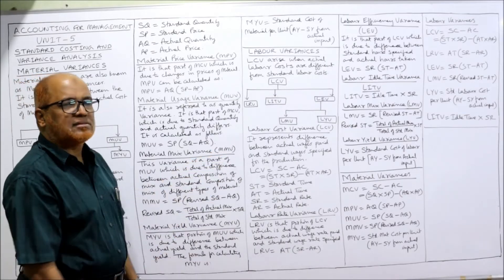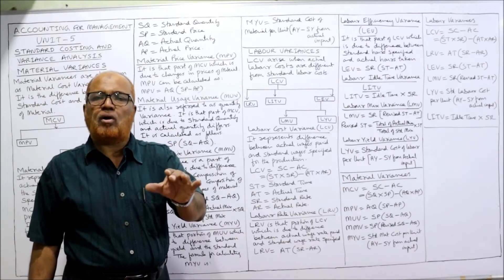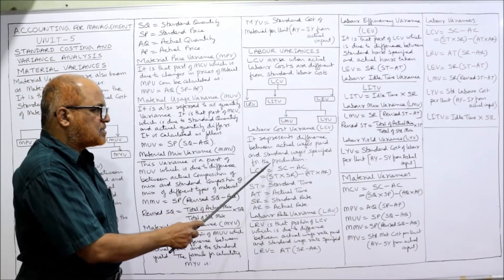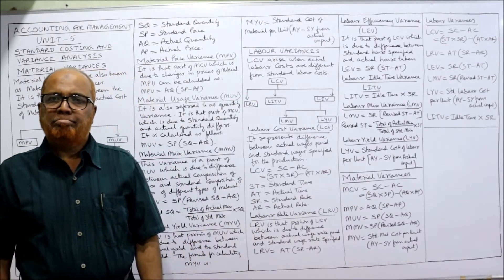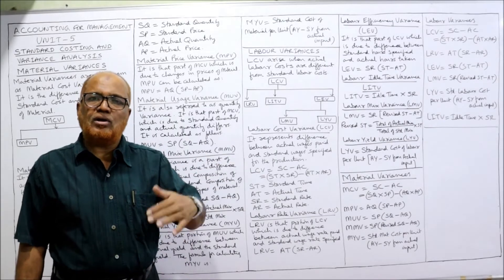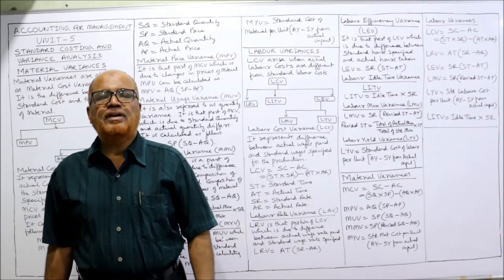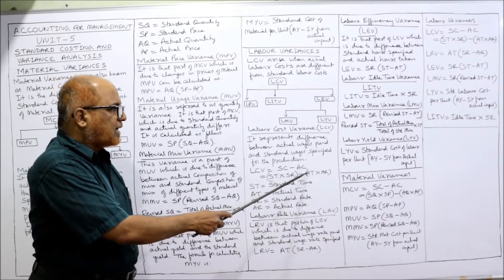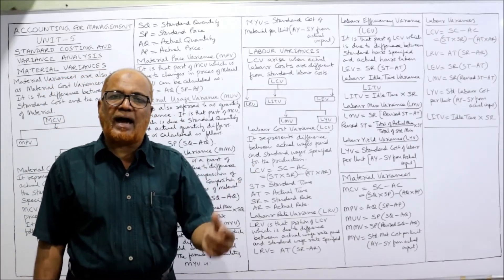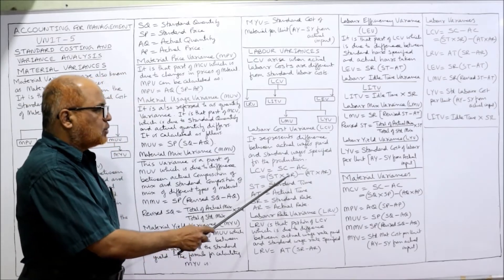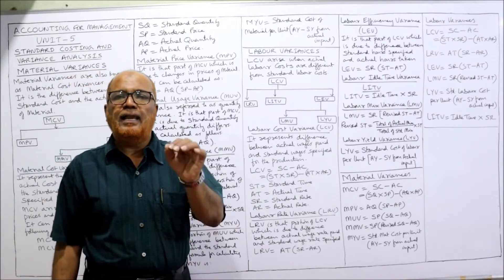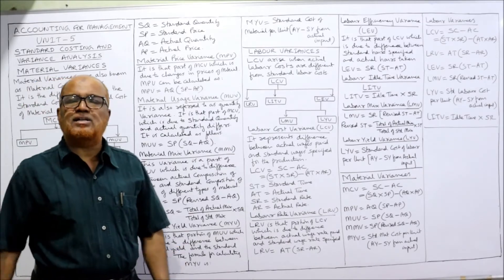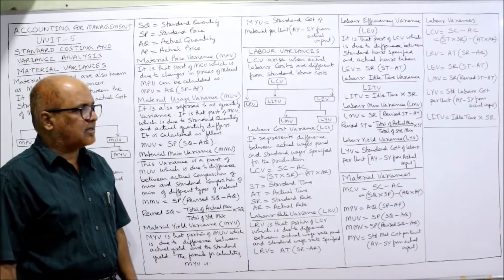Labor cost variance, LCV, arises when actual labor cost differs from standard labor cost. It represents the difference between actual wages paid and standard wages specified. The formula is similar to MCV: LCV = SC − AC, where Standard Cost = ST × SR (Standard Time × Standard Rate) and Actual Cost = AT × AR (Actual Time × Actual Rate). So LCV = (ST × SR) − (AT × AR).